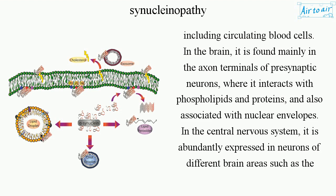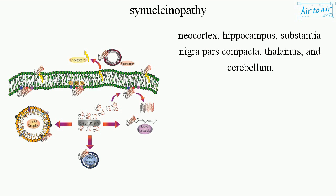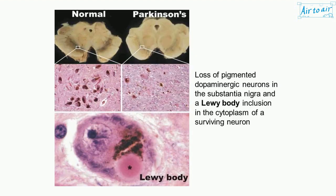In the central nervous system, it is abundantly expressed in neurons of different brain areas such as the neocortex, hippocampus, substantia nigra pars compacta, thalamus, and cerebellum.